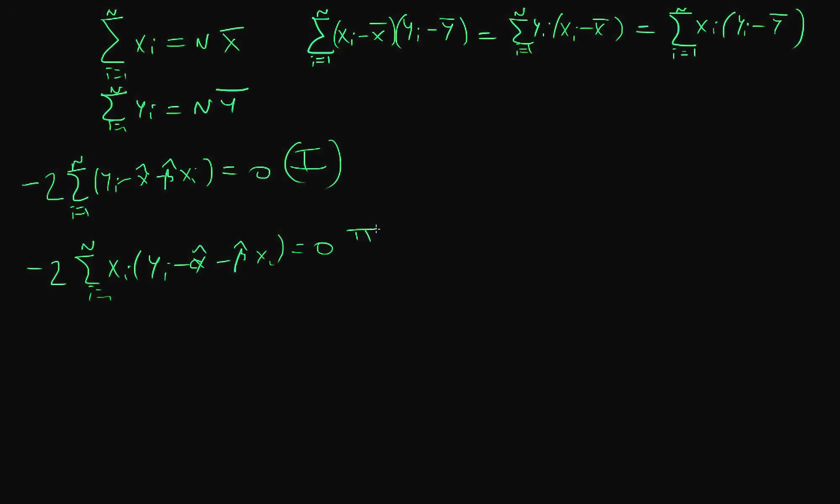In both of these first-order conditions I've got a minus 2 out the front, and that's not going to affect anything. I can just divide through by minus 2 because I've got 0 on the other side. So I really only need to think about this half onwards of these two first-order conditions.